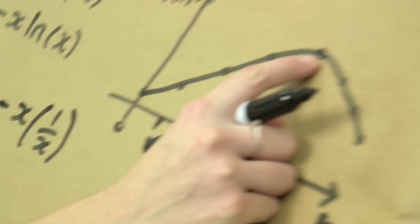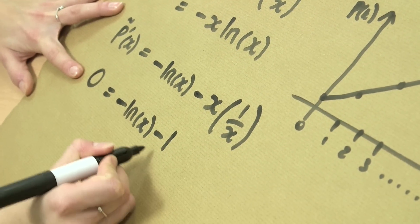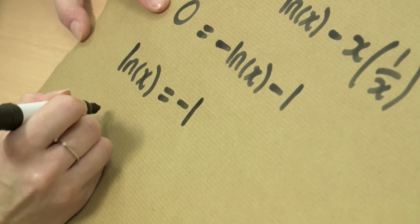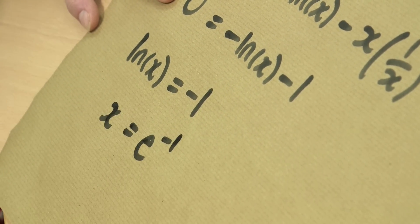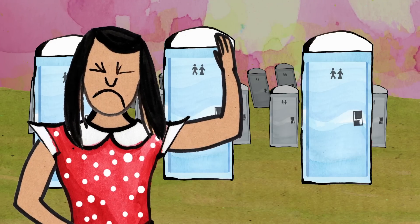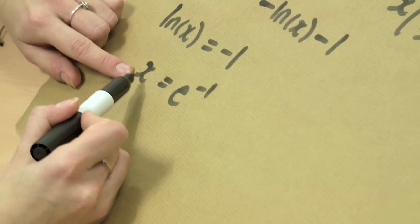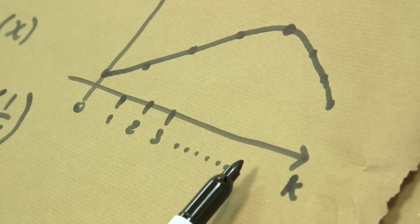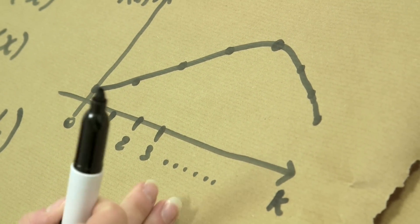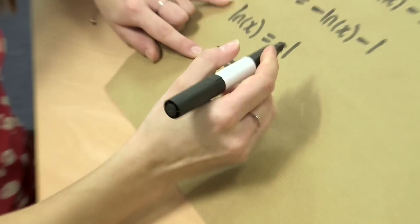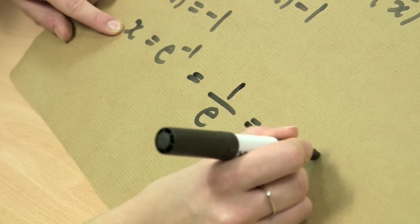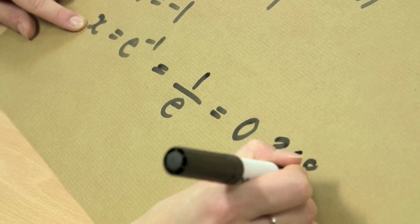In order to find the point where the gradient is 0, I set my derivative to 0. Rearranging gives ln of x equals minus 1, meaning x equals e to the minus 1. This is x not k — but remember x equals k over n, so this value is the point where I stop rejecting toilets and start comparing. This value is 1 over e, which is approximately 0.368.